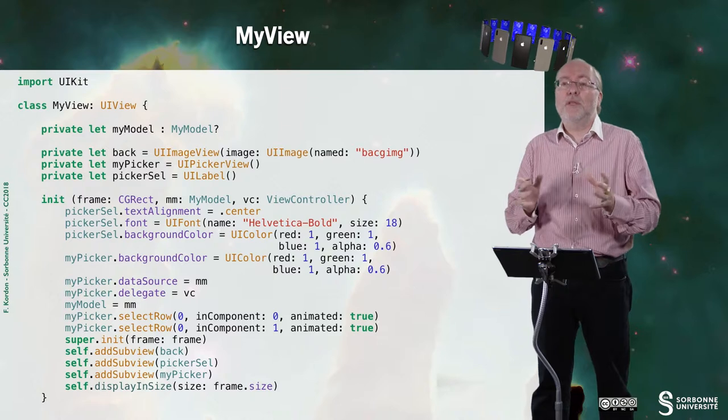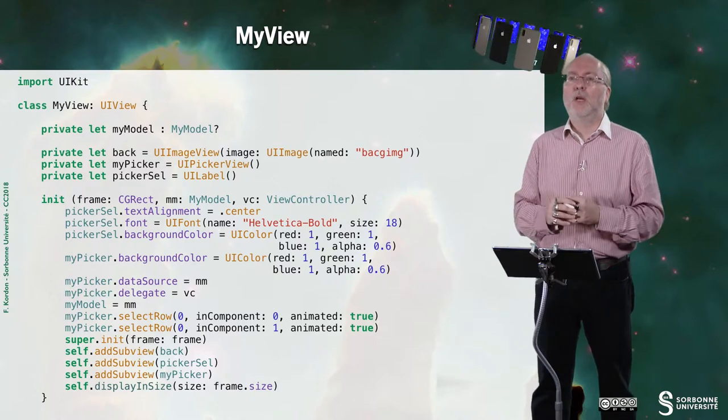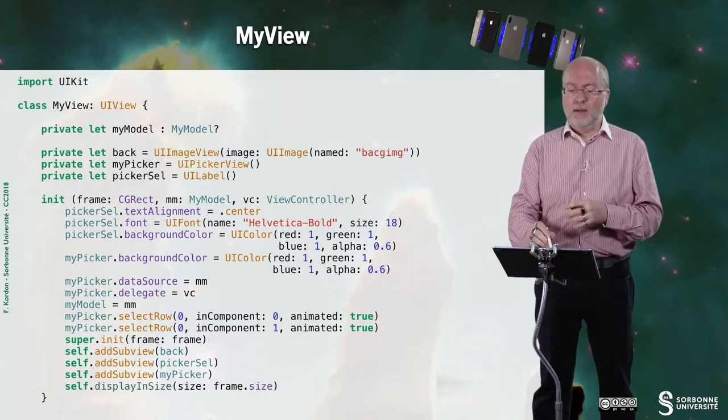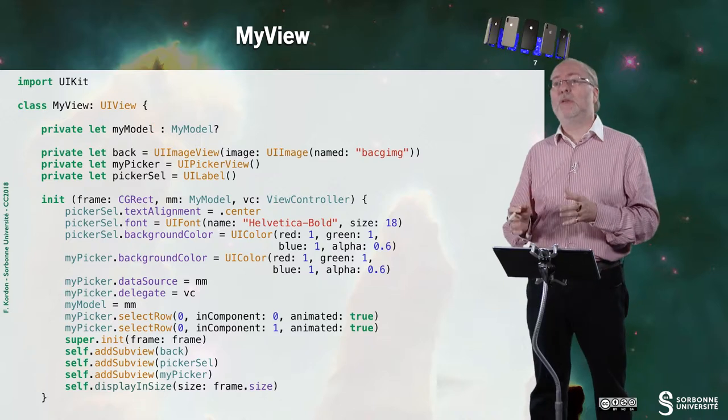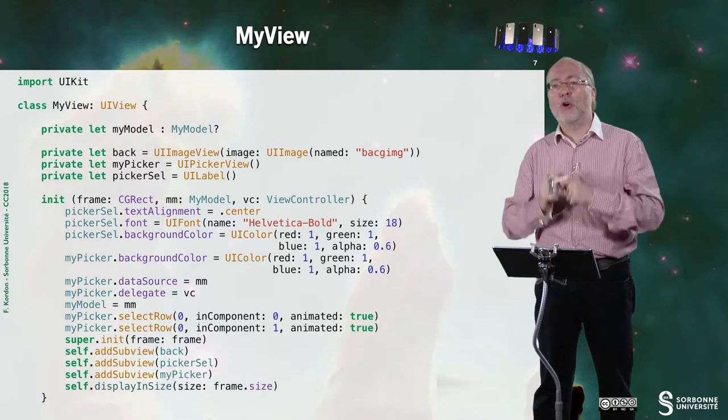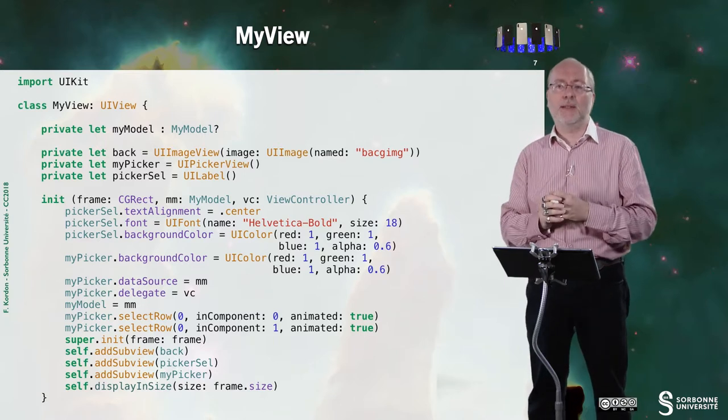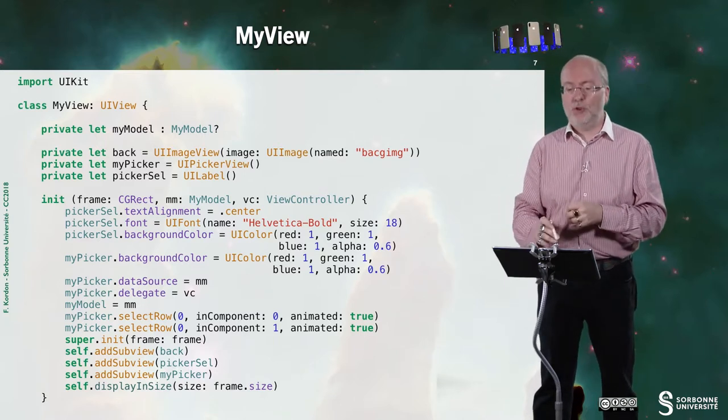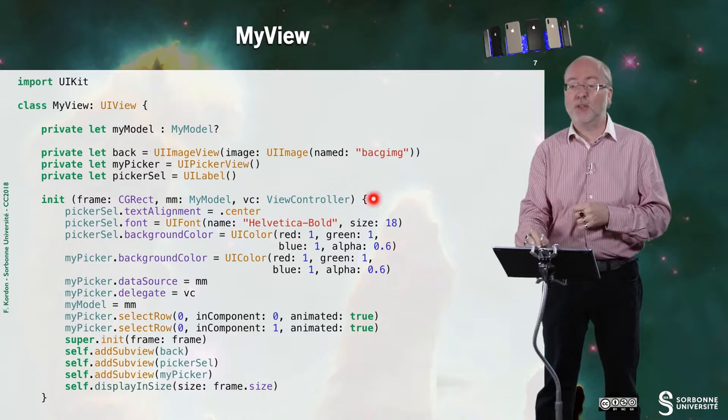So MyView is not responding to any protocol. But in fact, it needs a reference to my model because it will need to get the color that is currently selected. And we also need to have some information that is passed on the init.